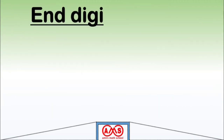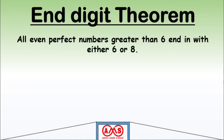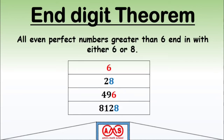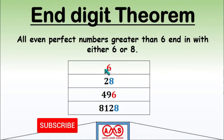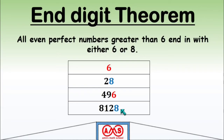Now let us see the end digit theorem: all even perfect numbers greater than 6 end with either 6 or 8. We know 6 is a perfect number, the next is 28, then 496, then 8128. We can easily see that all perfect numbers greater than 6 either end with 8 or 6: 28 ends with 8, 496 ends with 6, and 8128 ends with 8.